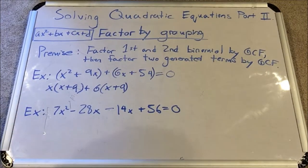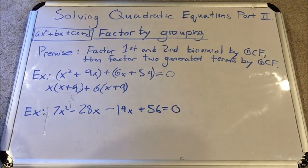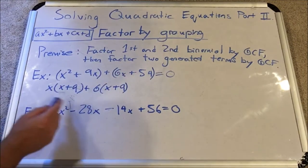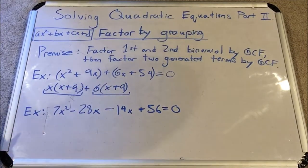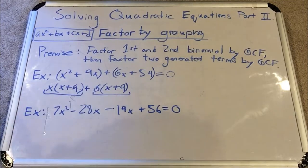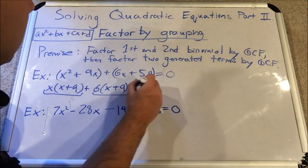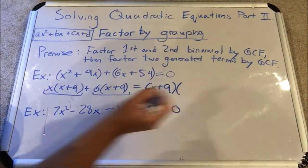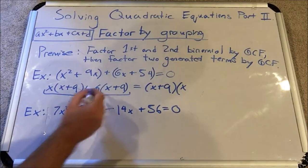The way these are set up in your math books is that if you do it correctly, the two binomials inside parentheses will be the same. I've created from four terms two products, and now I really have two terms. What factor do they share? They each share (x + 9). So I'm going to factor out that entire (x + 9) — yes, it's a binomial being factored out, totally legal. What's left in the first term is x and in the second term is 6.